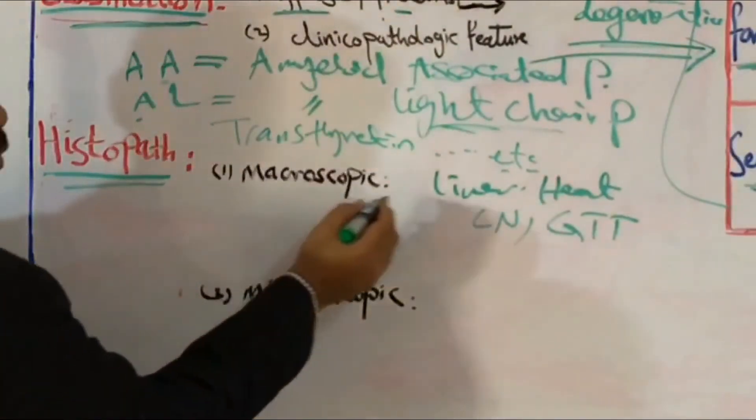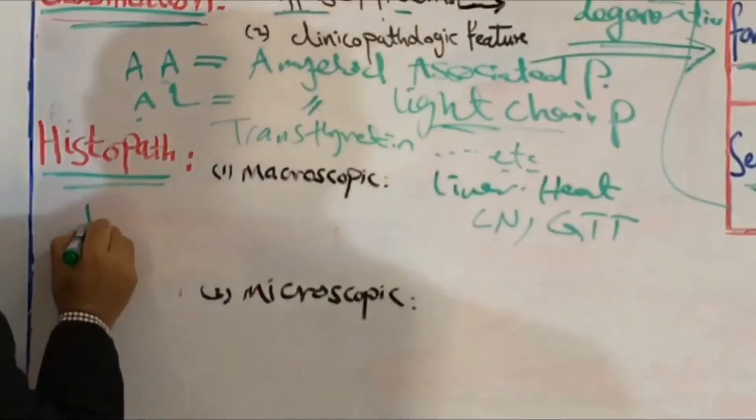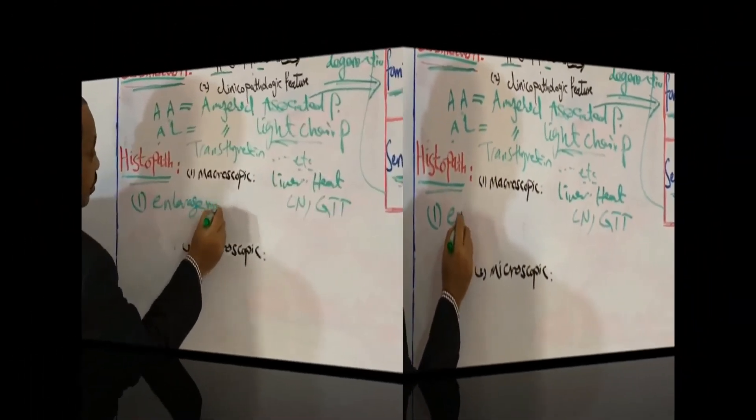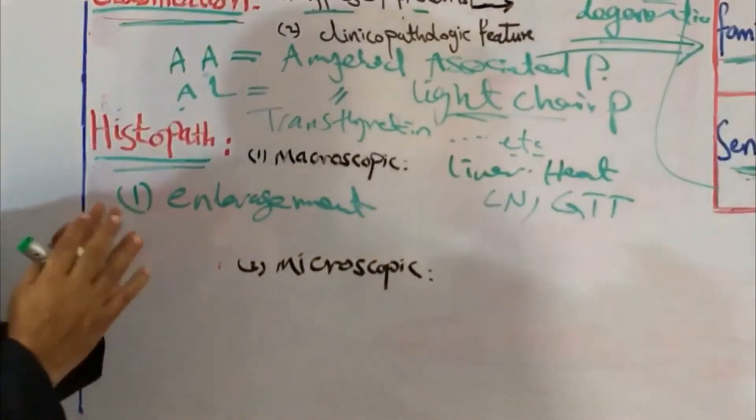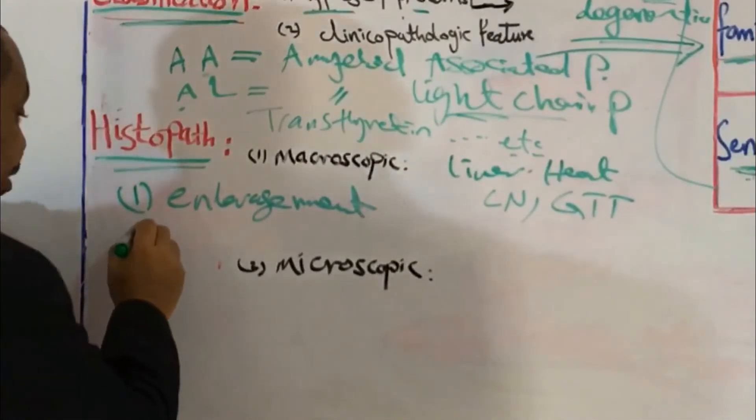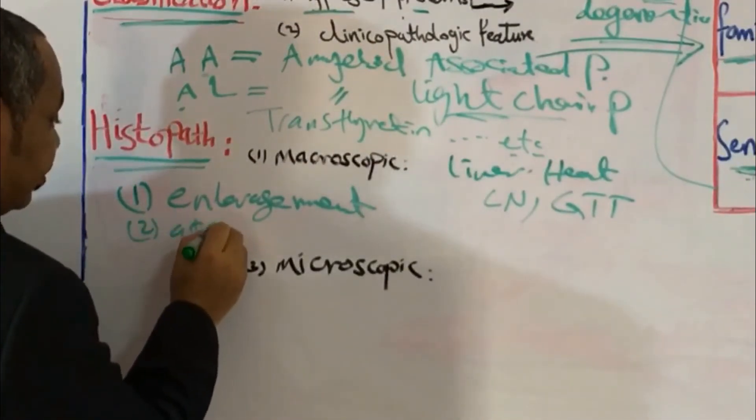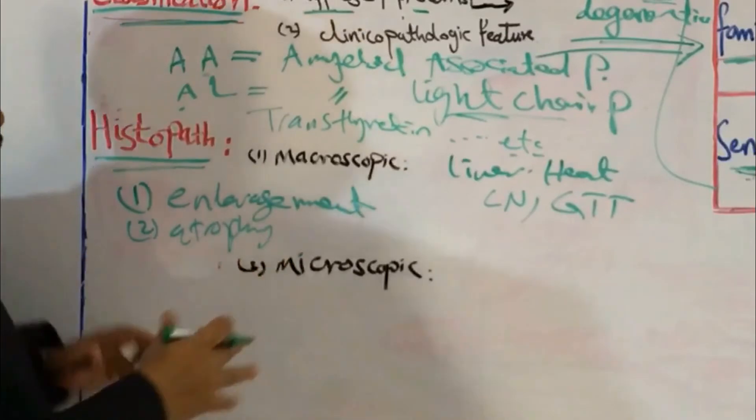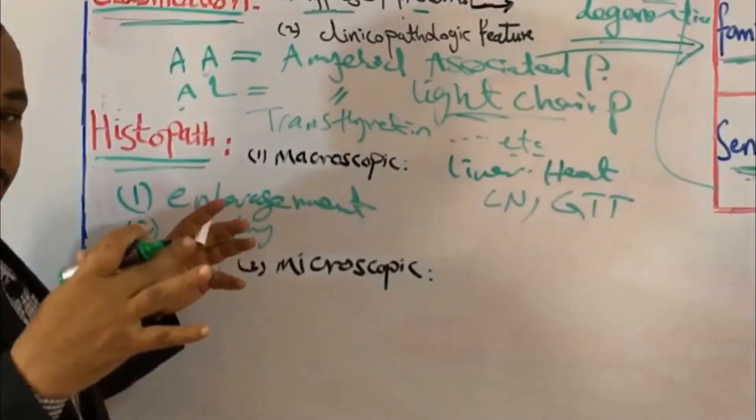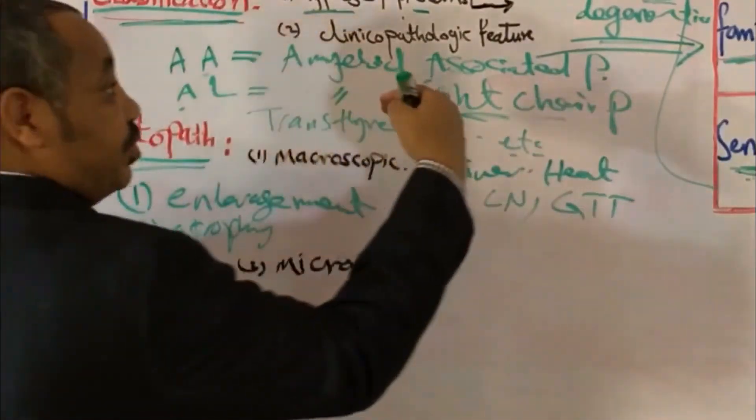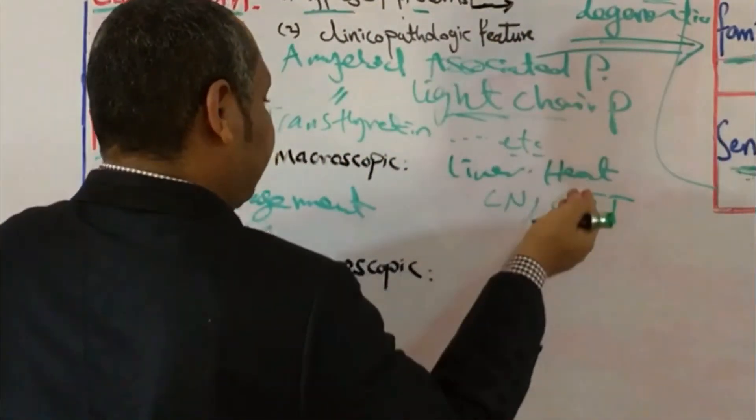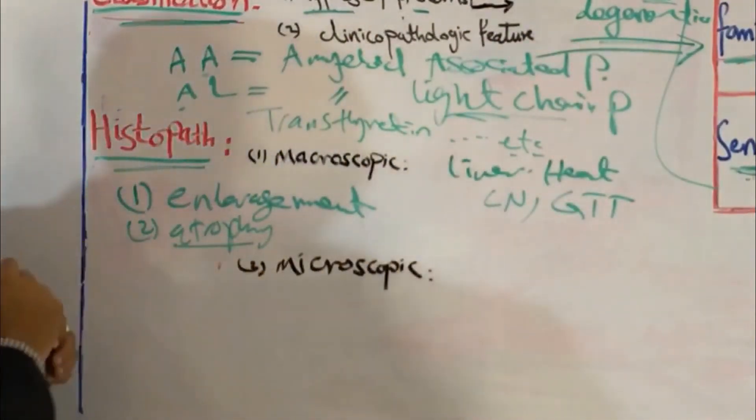So macroscopically, you will find these organs are enlarged. So the first point here, enlargement of affected organ. Then after that, this organ will be atrophied. So the next point here, atrophy. So this organ started first of all to be enlarged due to this deposition of protein. Then after damaging and after degeneration take place, it will be an atrophied organ.